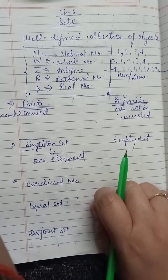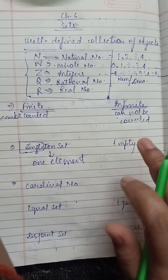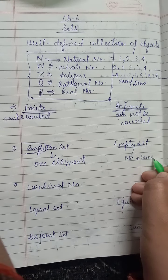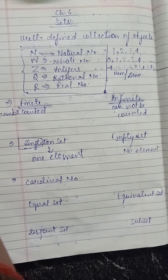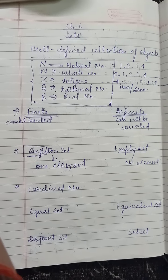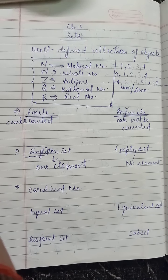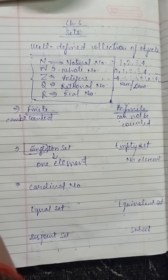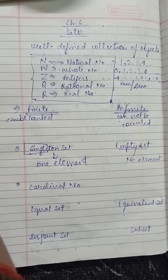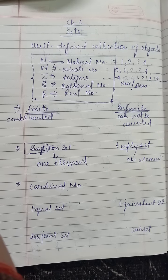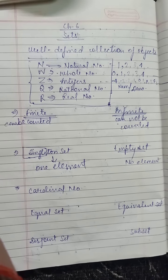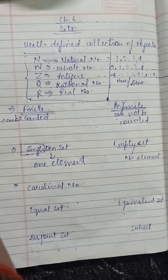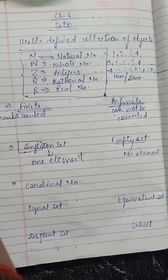Next is empty set — the set which contains no element is called an empty set. For example, the set of boys and girls in your class of age more than 30 years. Is it possible to have a boy or girl in your class more than 30 years old? No, so it is an empty set.